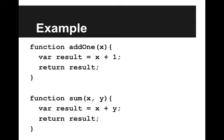I've slightly modified our addOne and sum functions from earlier. When you call addOne with x, we make a variable called result, which is equal to x plus 1, then we return the result. And then for sum, we make a variable called result, and that's equal to x plus y, and we return the result.